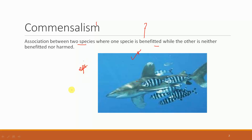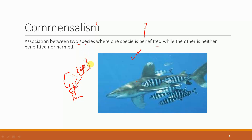Another example is that of epiphytes. These are largely plants which climb upon trees for support. These plants that are climbing upon trees are definitely getting light and better support, getting exposure to light, but for the tree there is no particular harm from the presence of these climbers. So this is another example of commensalism.